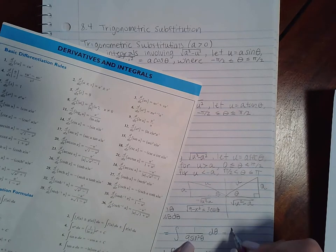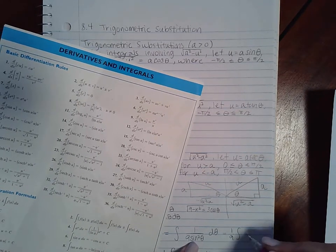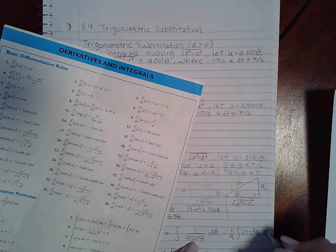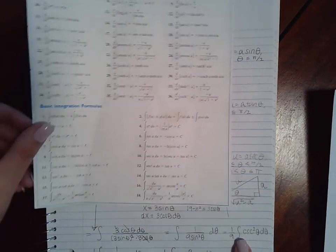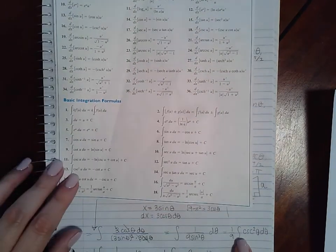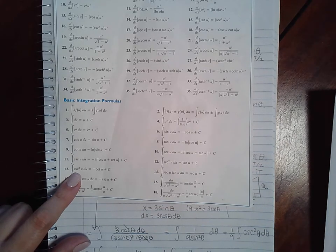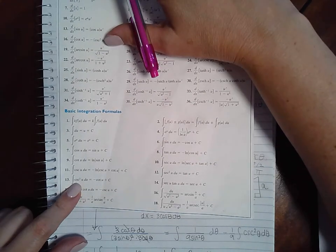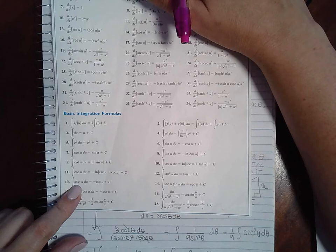I actually noticed one thing. Notice here you have one ninth, and instead of writing one over sine squared, you could write cosecant squared theta. The reason that stuck out to me is because if you look here, you actually have an integral for cosecant squared, which means I didn't have to do the power reducing formulas. I could have just used this integration right here.